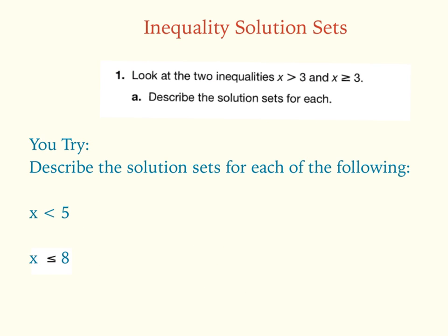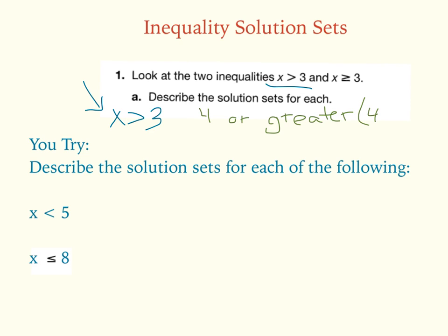Today in class we talked about solution sets when discussing the roller coaster activity. For x is greater than 3, we think of every number we could plug in for x. We could say 4, 5, 6 — but not 3, because 3 is not greater than 3. So the solution starts at 4 and goes to infinity. For x is greater than or equal to 3, the equal to means 3 is included, since 3 equals 3, along with any number greater.